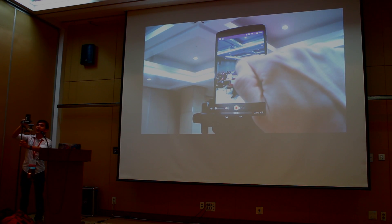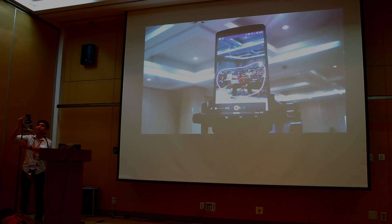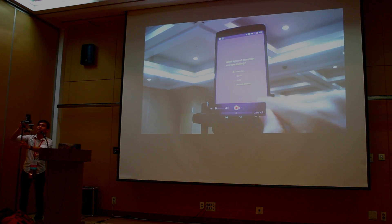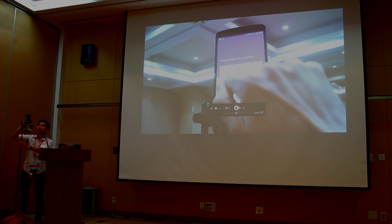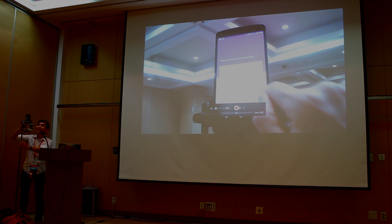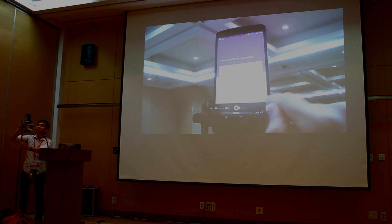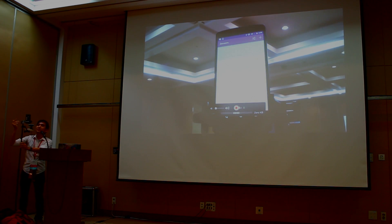I'm going to highlight a region of the image, right about there. It asks me to specify the type of question — let's say this is a yes/no binary question. I hit Next and enter the question: are hands raised? Then I'm going to set the frequency to five seconds. My sensor is now live.